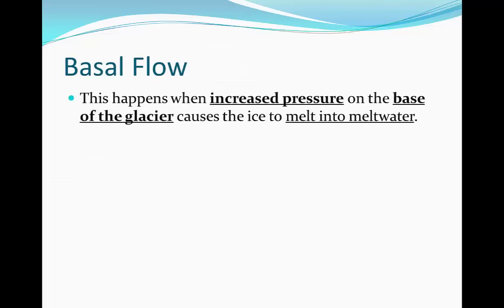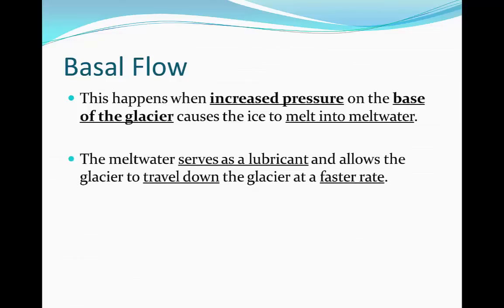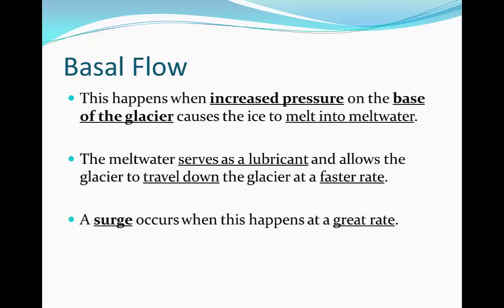Basal flow happens when increased pressure on the base of the glacier causes the ice on the base to melt and form meltwater. The meltwater serves as a lubricant and it allows the glacier to travel down the valley at a faster rate. A surge occurs when this happens at a very fast rate.